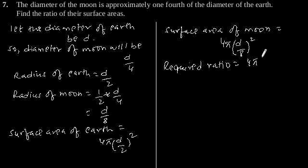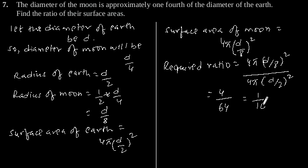4π(d/8)² divided by 4π(d/2)². This is equal to 4 divided by 64, which is equal to one by sixteen. Therefore, the required ratio is 1:16.